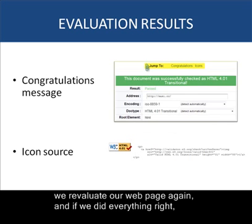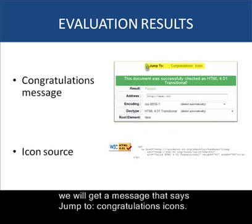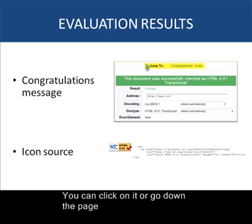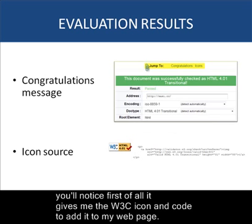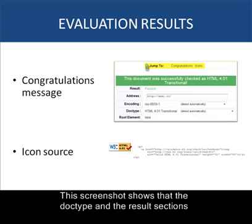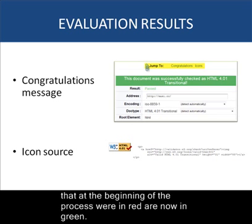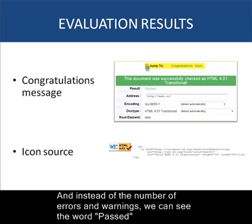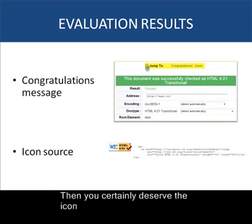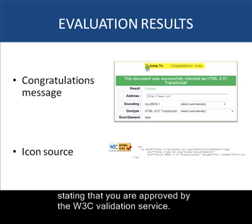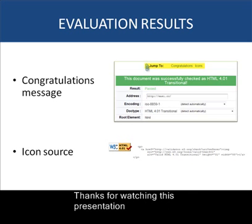Finally, after fixing all the errors, we evaluate our web page again. If we did everything right, we will get a congratulations message with a W3C icon and code to add to our web page. This screenshot shows the doctype and result sections that were previously in red are now green, and instead of the number of errors and warnings, we can see the word 'Passed.' You certainly deserve the icon stating that you are approved by the W3C Validation Service. Thanks for watching this presentation. Goodbye.